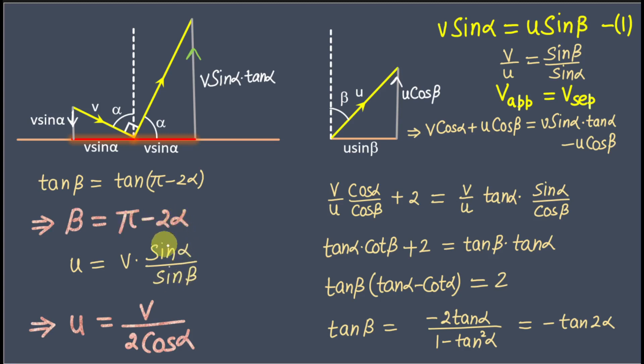I had to also determine the value of u in terms of v. Using the first equation u sinβ = v sinα and substituting β = π − 2α, sin(π − 2α) becomes sin 2α = 2 sinα cosα. The sinα cancels out, and we get u = v / (2 cosα). I hope you guys enjoyed this video. Please share it with your friends. Thank you.